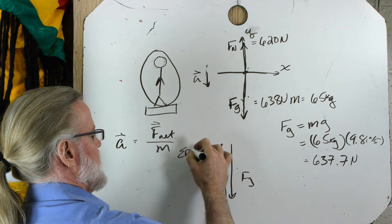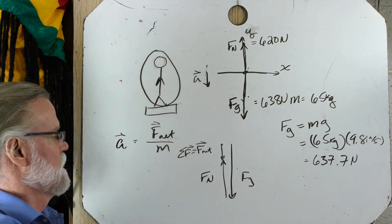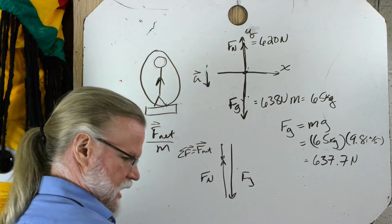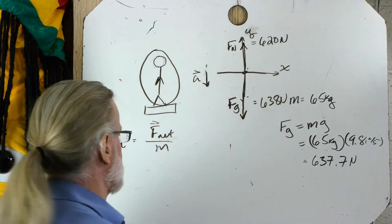Also, sigma F, right? Either way. There we go. So we're going to have a downward acceleration because we have a net force downward. And since we're supposed to give as much detail as possible.